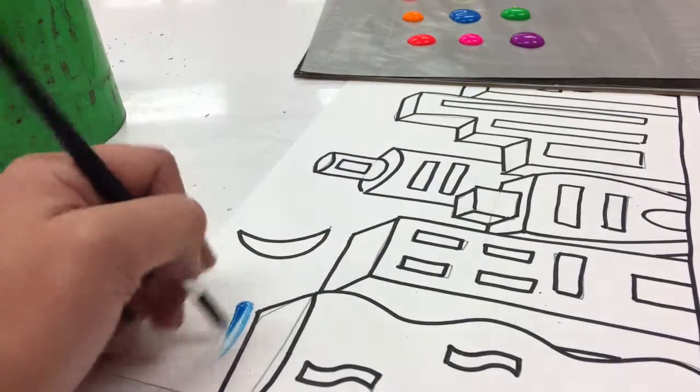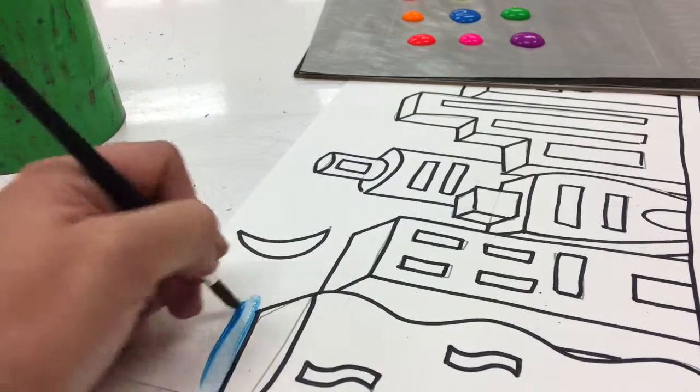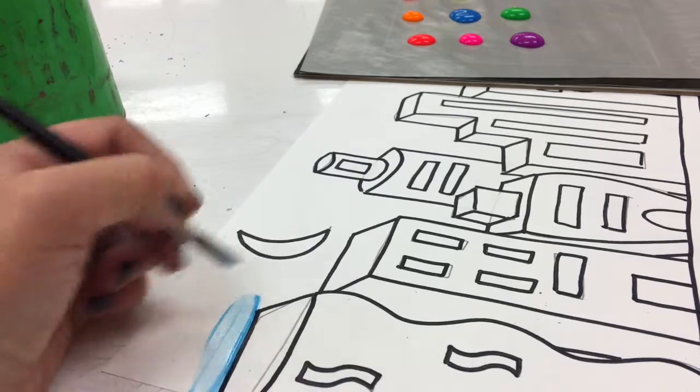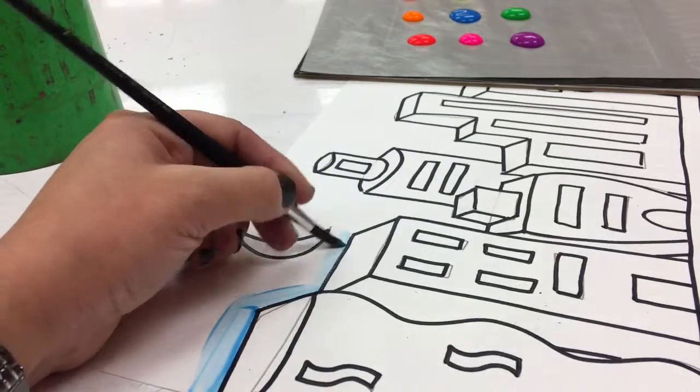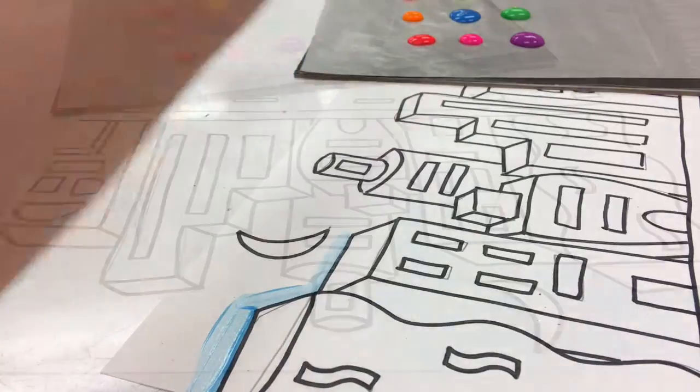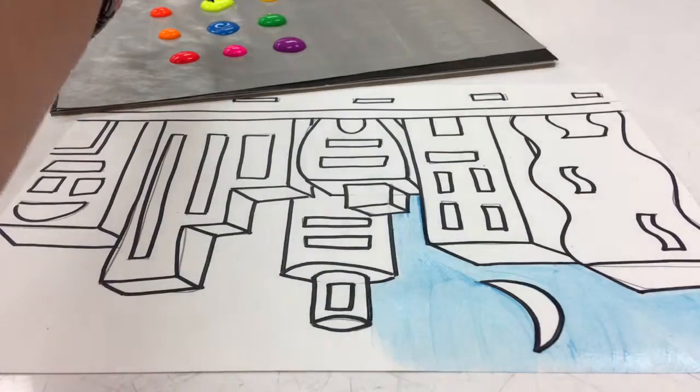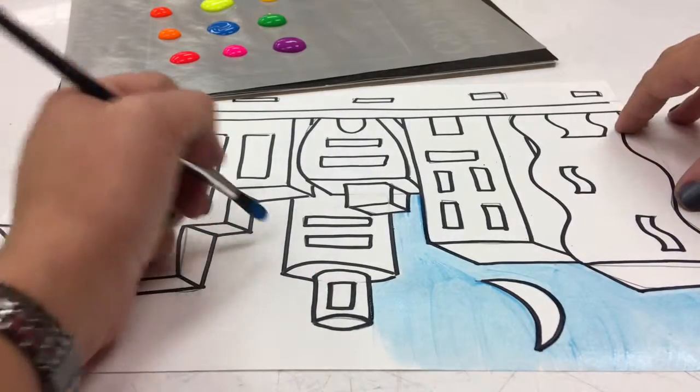Remember that I like to outline things first. I just think it gives me a good stopping point in case I do go a little bit too far while I'm filling in the big spaces. You always want to try to paint in the same direction just so that you don't see as many streaky lines.